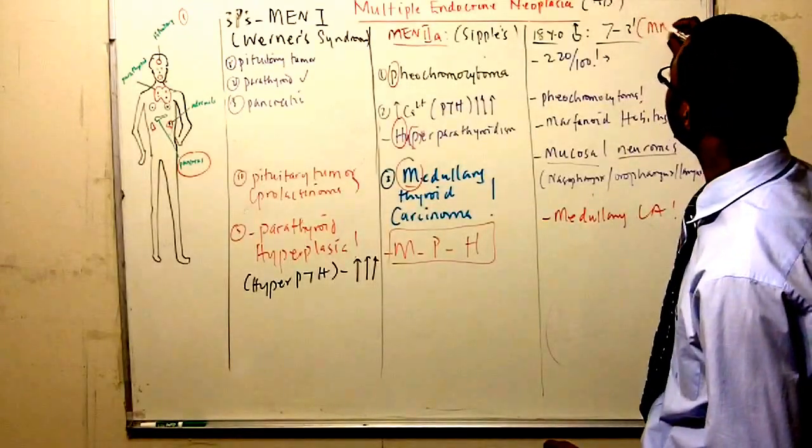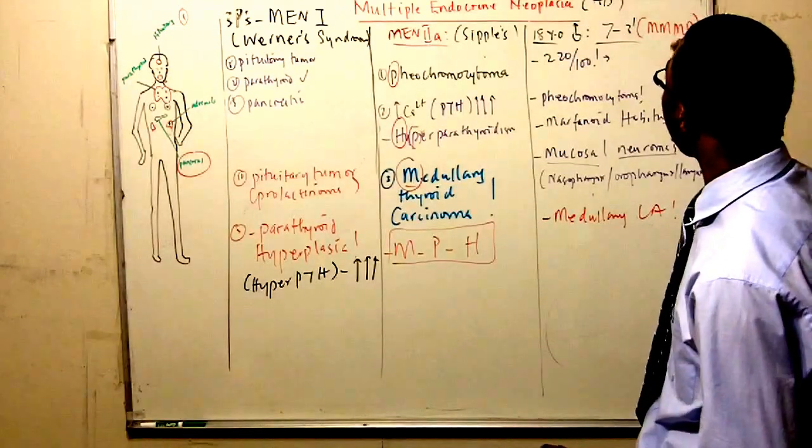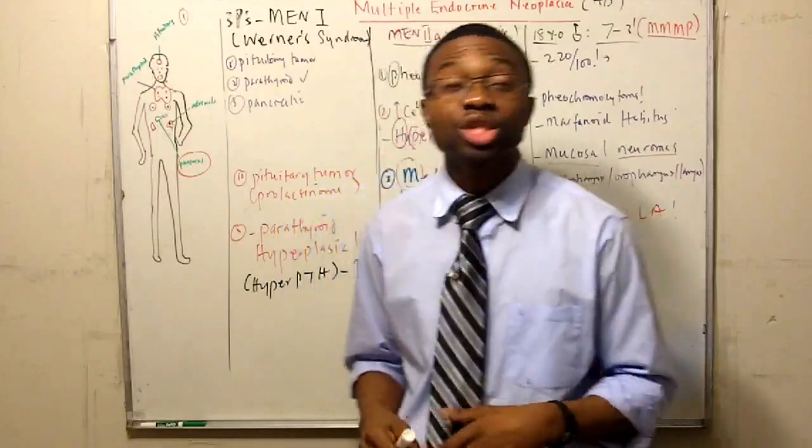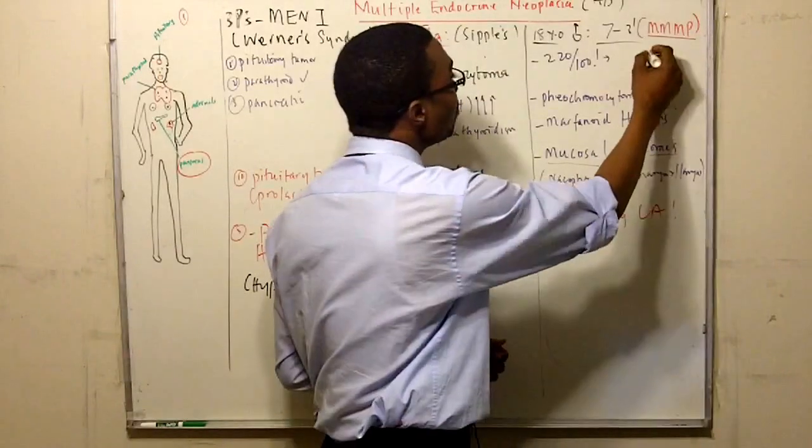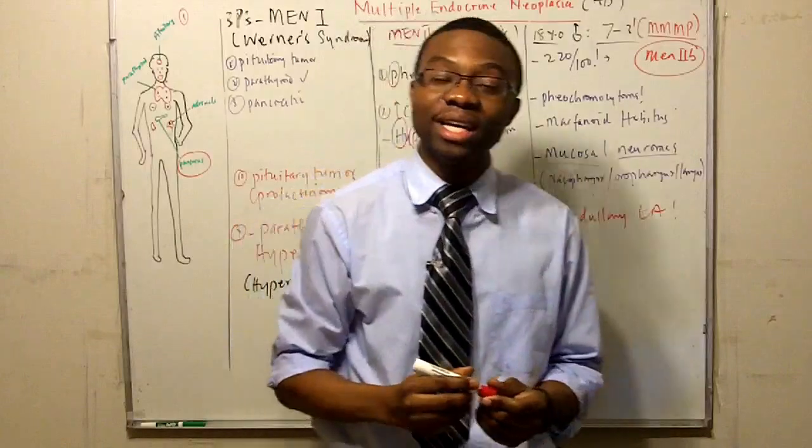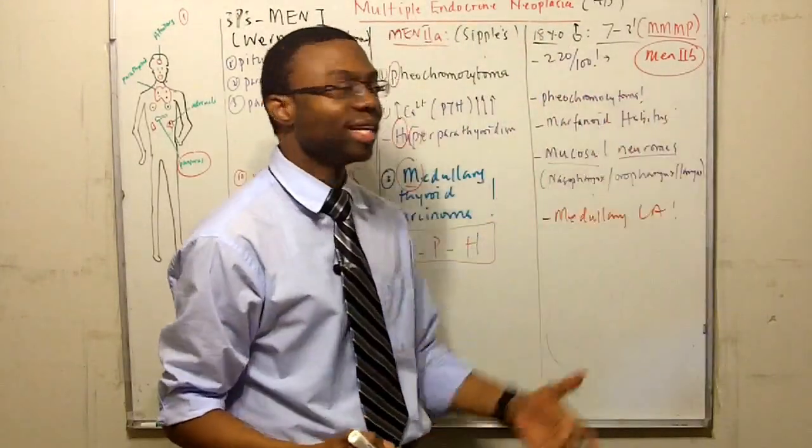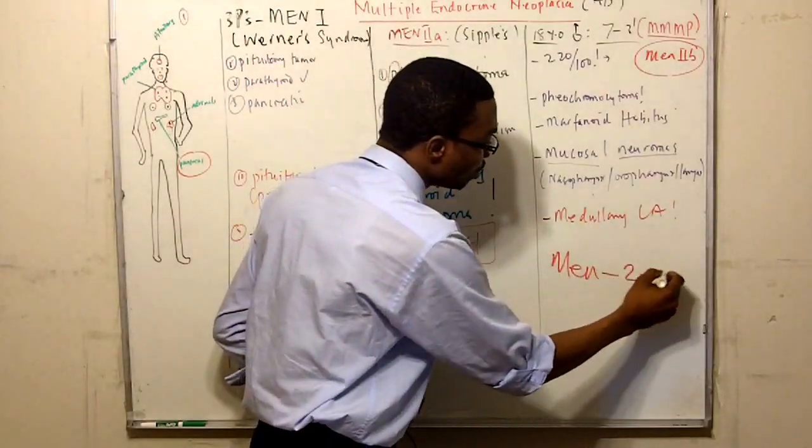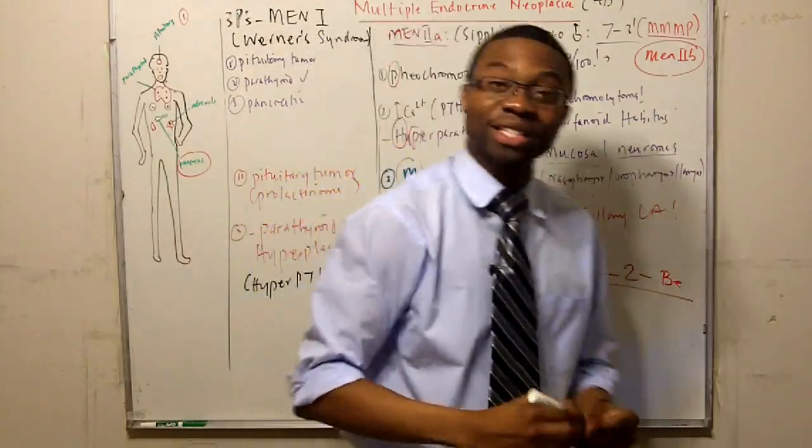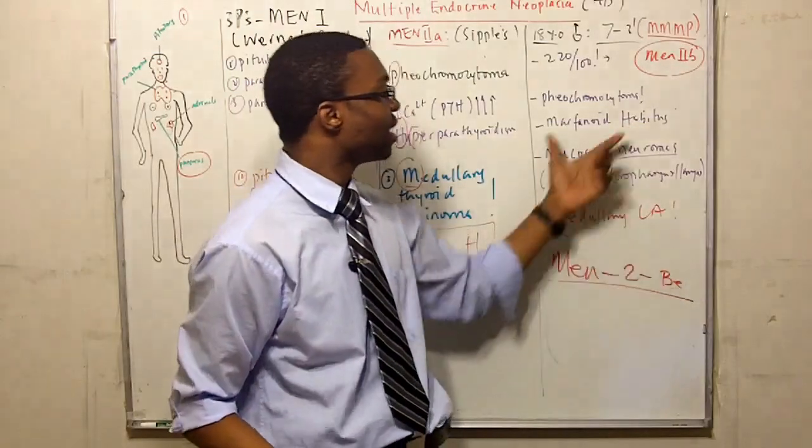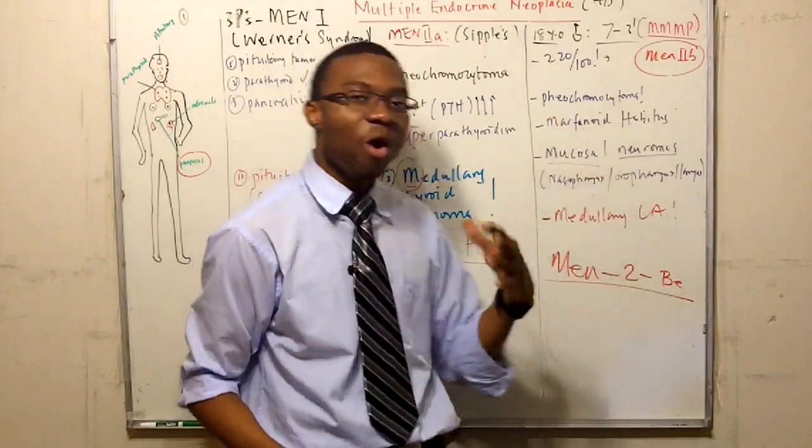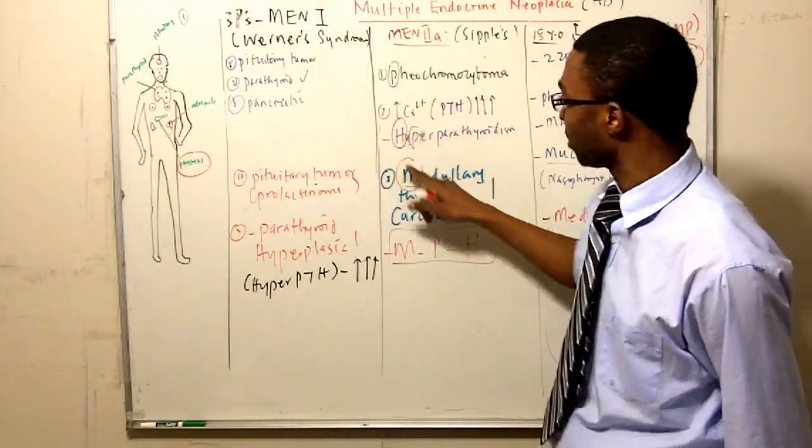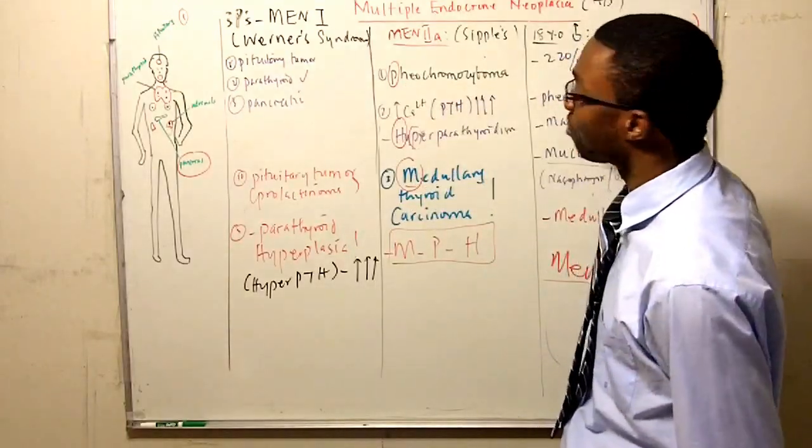But guess what? The only way you're going to remember him is because he's the guy that has a lot of M's and a P. So how do I keep track of Werner's, the older sister, Sipple with the nipple which is 2A, and this is called MEN 2B. Well, how do I remember him? He's the MEN-to-be. He's 18 years old and he's also eventually going to grow up to be a man one day. So it's MEN-to-be, right? It's a MEN-to-be.